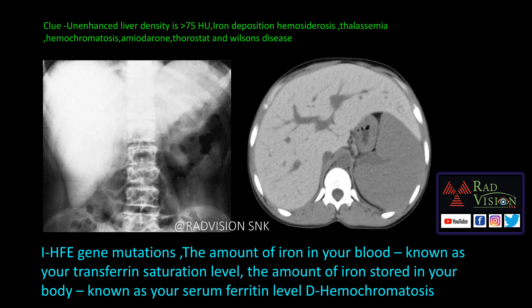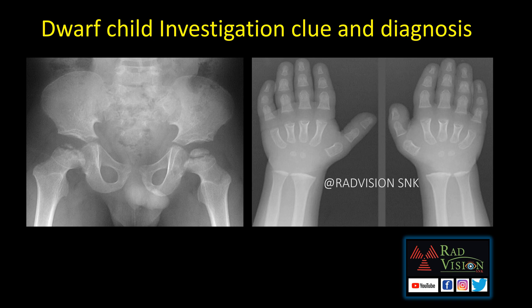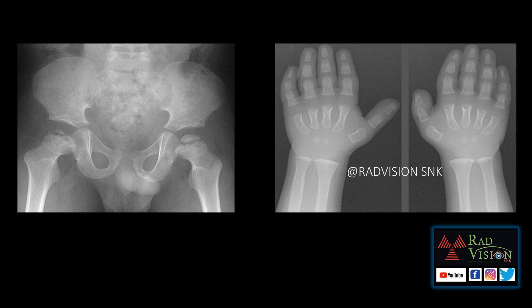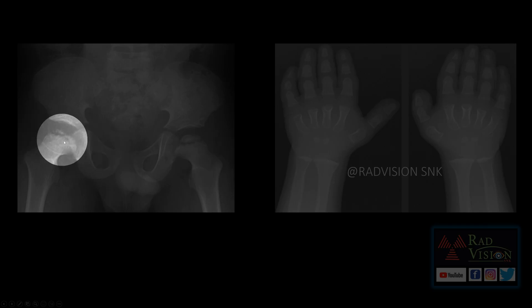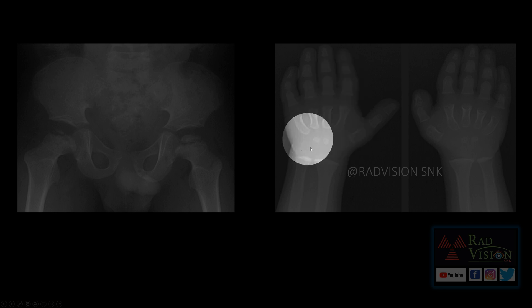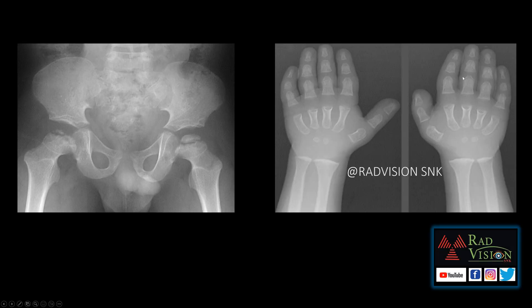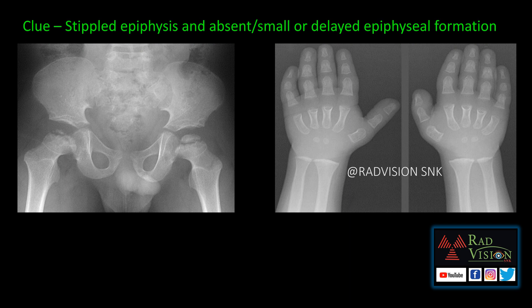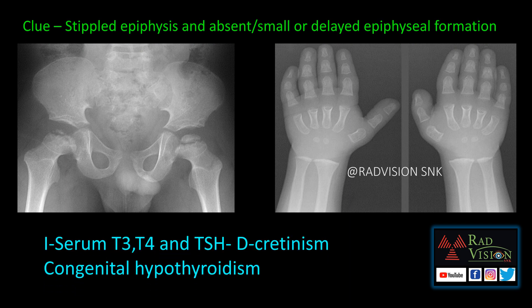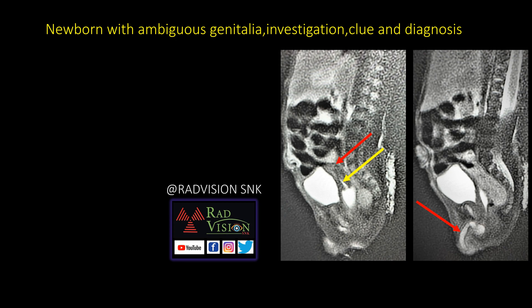Next: a dwarf child. The clues are stippled epiphysis in the right femoral head, absent or small epiphyses in the radius, ulna, metatarsals, and phalanges, and short stubby fingers. The investigation to advise is serum T3, T4, and TSH. The diagnosis is cretinism or congenital hypothyroidism.